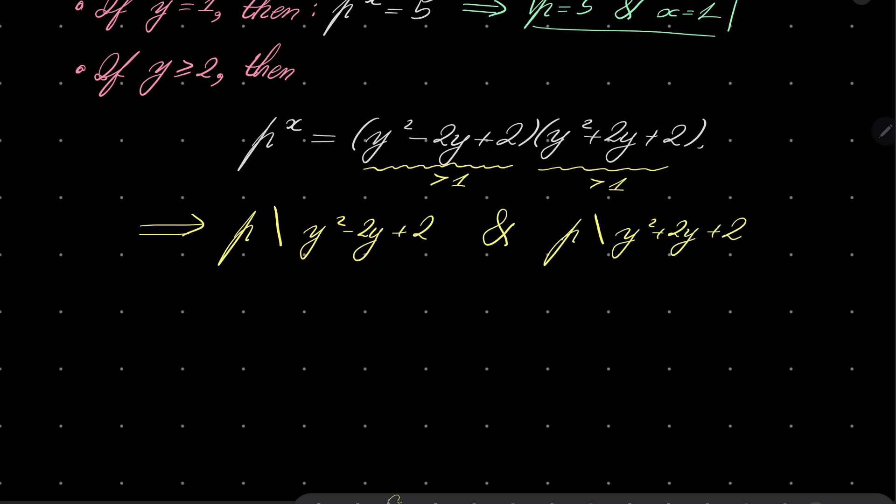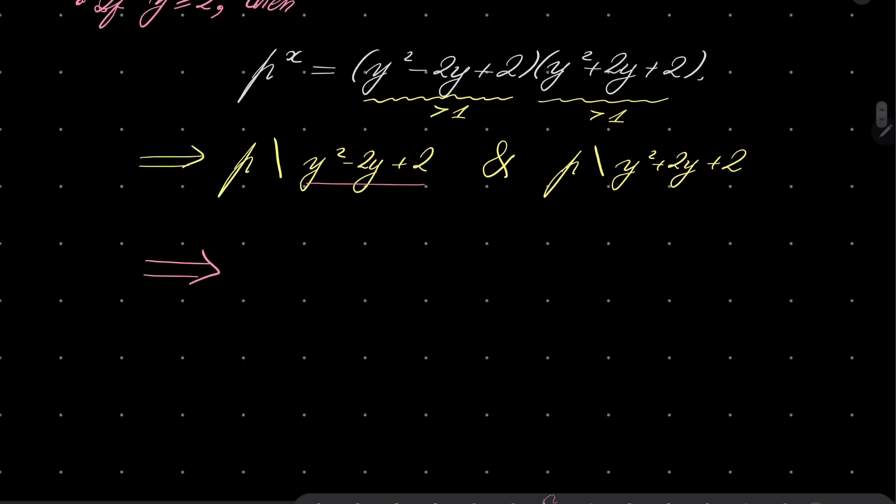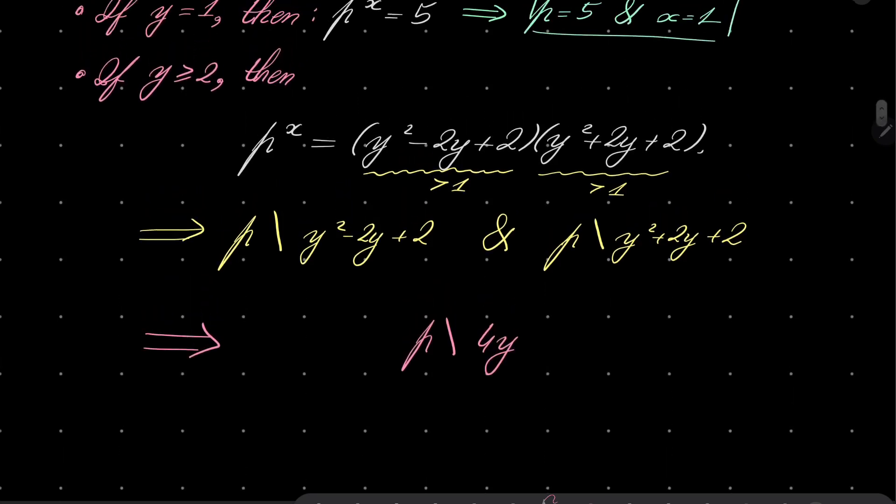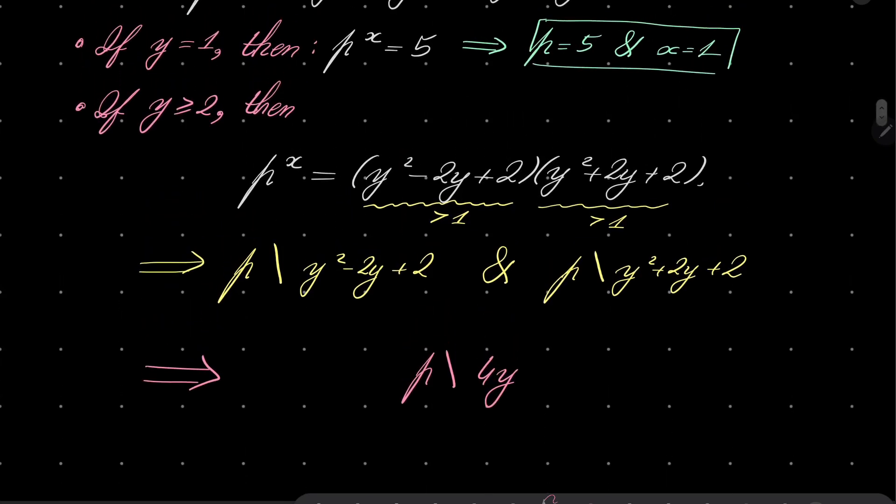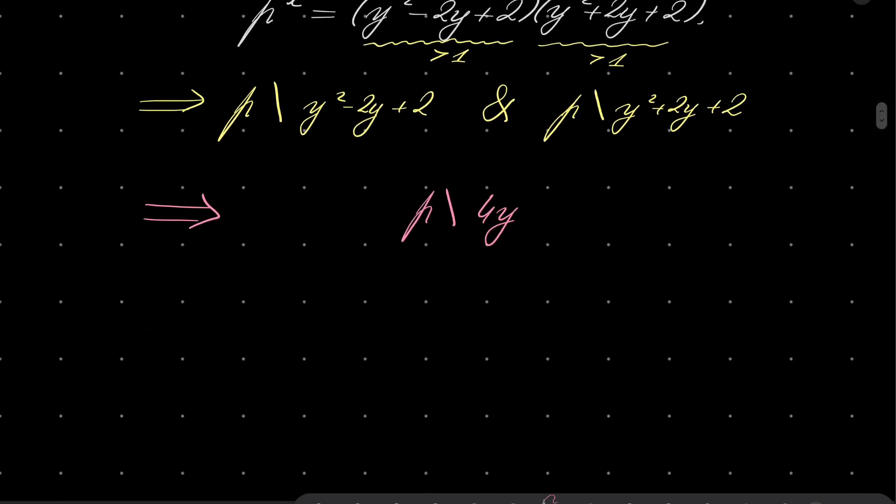So it must be the case that p divides both of them, which means in turn that after subtraction, subtracting this from that, p must divide 4 times y. But remember that p is odd, so p cannot divide 4. Since p is odd, it must be the case that p divides y itself.